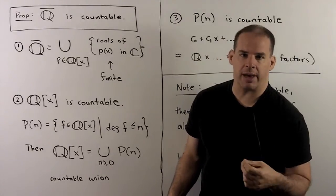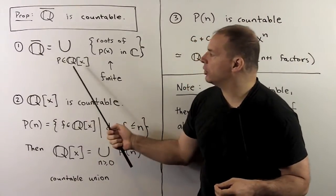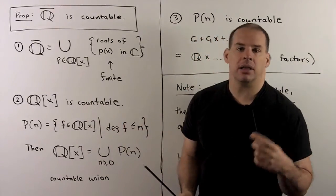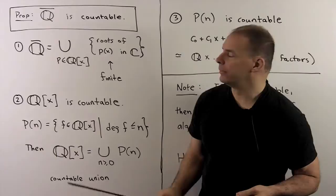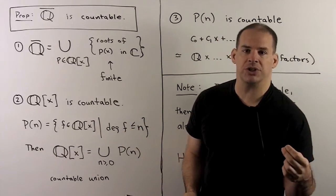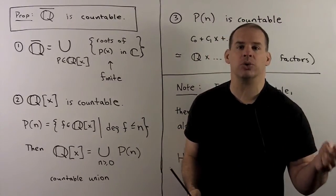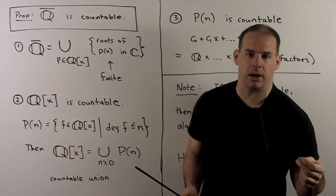To see that Q bar is countable, we'll proceed in several steps. First, we want to write Q bar as a countable union of finite sets. Then Q bar is countable. Here, the indexing set is all polynomials with rational coefficients. To each polynomial, we assign a finite set of all roots of that polynomial in the complex numbers.